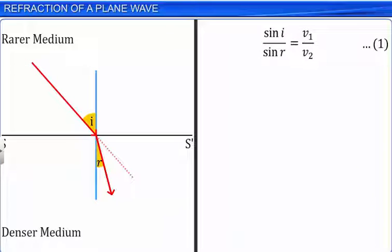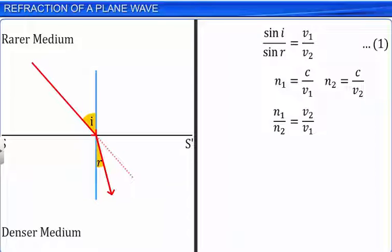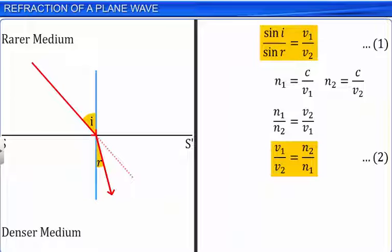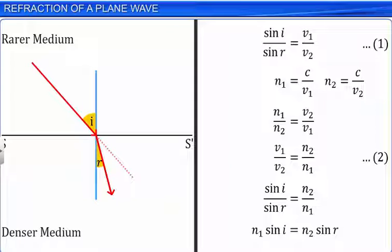If C is the speed of light in vacuum, then the refractive index of medium 1, N1, is equal to C by V1, and the refractive index of medium 2, N2, is equal to C by V2. Therefore, N1 by N2 equals V2 by V1, which can also be written as V1 by V2 equals N2 by N1. Let this be equation 2. From equations 1 and 2, we can write sin I by sin R equals N2 by N1. This can also be written as N1 sin I equals N2 sin R. This is Snell's law of refraction.